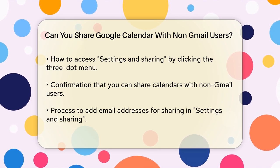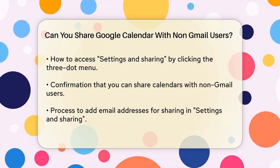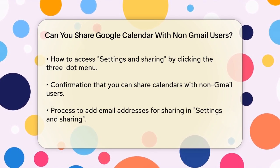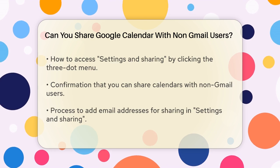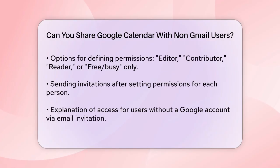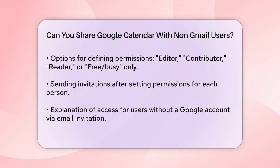To share with specific people, click on Share with specific people or groups and add their email addresses. You can define the permissions for each person, such as Editor, Contributor, Reader, or Free Busy only. Once you've set the permissions, hit Send, and they'll receive an invitation to access your calendar.